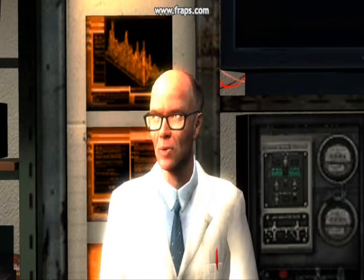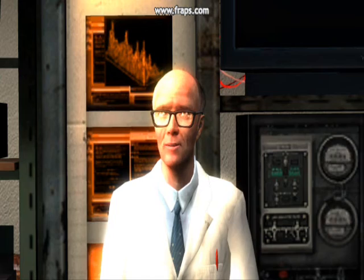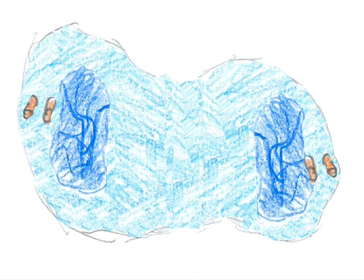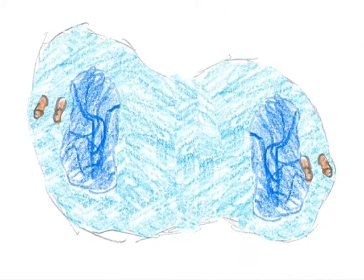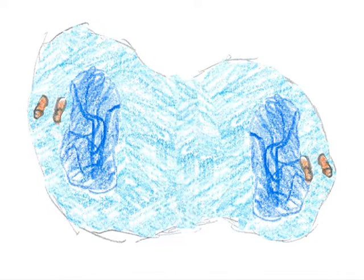During the next stage of mitosis, telophase, the chromosomes begin to stretch out and lose their rod-like appearance. A new nuclear membrane forms around each region of chromosomes.